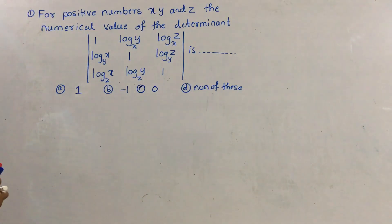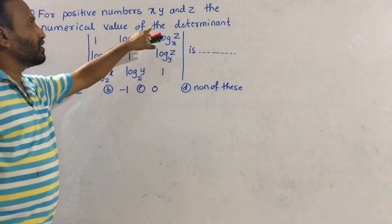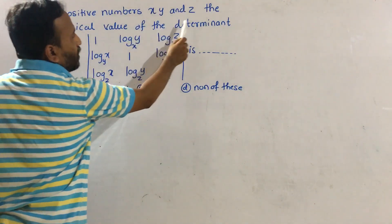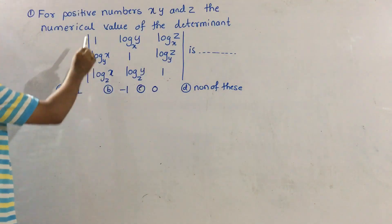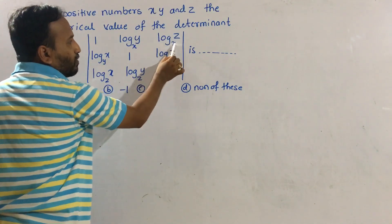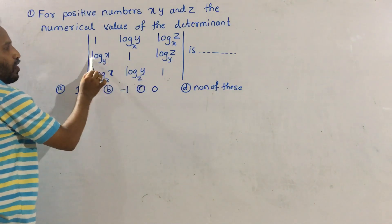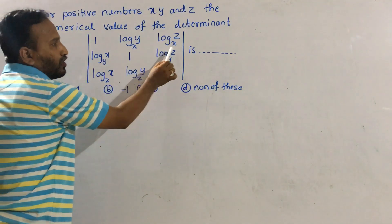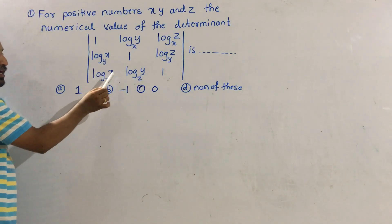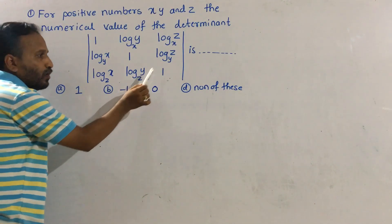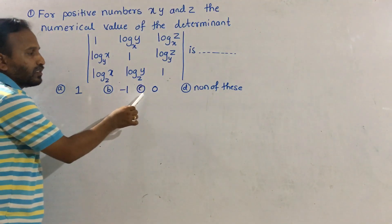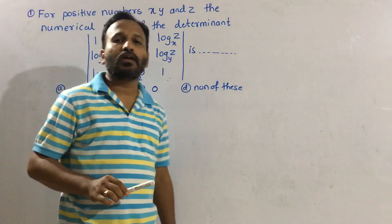The question is: for positive numbers x, y, and z, the numerical value of the determinant — first row: 1, log y to the base x, log z to the base x; second row: log x to the base y, 1, log z to the base y; third row: log x to the base z, log y to the base z, 1. Options are: first, 1; second, minus 1; third, 0; fourth, none of these.